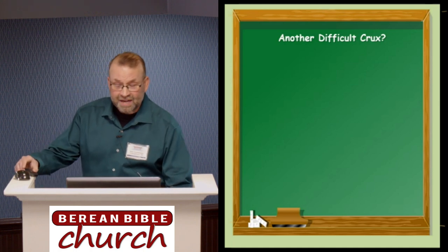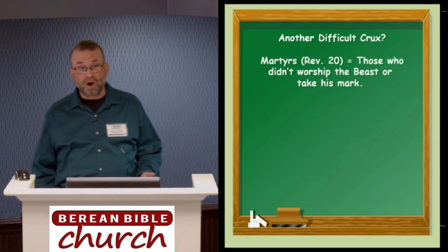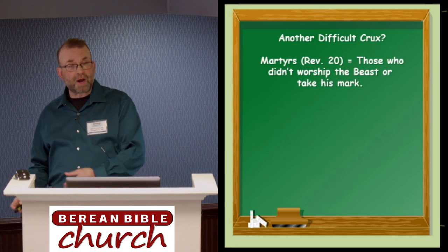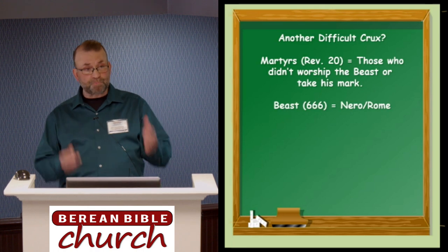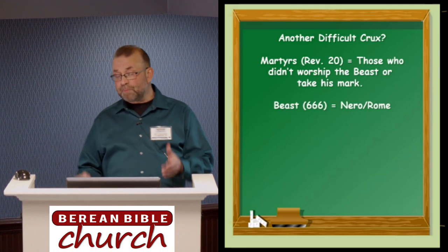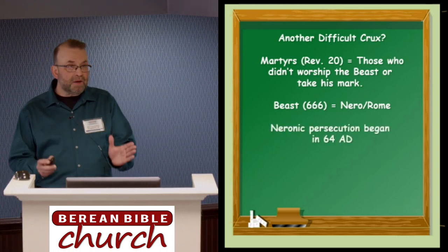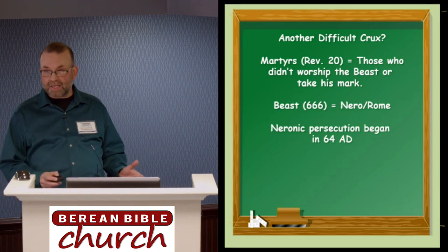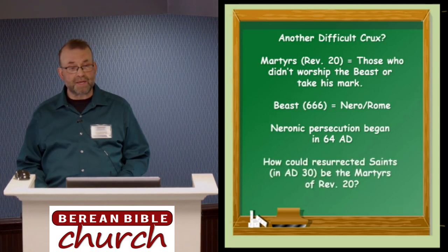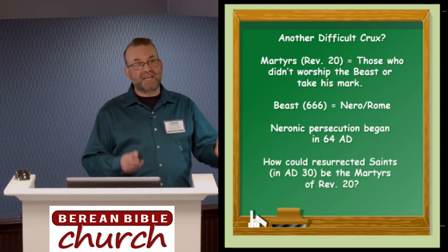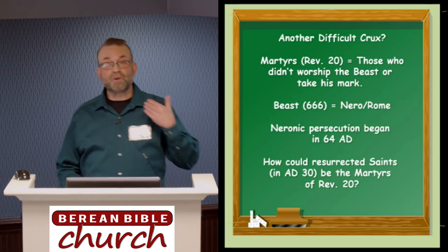With that in mind, however, there would seem to be another difficult crux that needs to be resolved. The martyrs of Revelation 20 are those who didn't worship the beast or take his mark. As preterists, we correctly identify the beast with Nero Caesar or the Roman Empire. But here's the thing: Nero wasn't even born until 37 AD, and he didn't start persecuting Christians until 64 AD. So how could Old Testament saints be the martyrs killed by the beast if they lived and died long before there even was a beast?